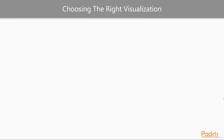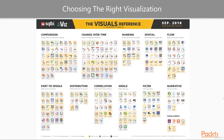Another important aspect to knowing your visualizations is how to identify the right chart to use depending on the type of data and the story you're wanting to tell. A great tool for this is called the Visuals Reference, made by Marco Russo and Alberto Ferrari over at SQLBI. It categorizes the majority of available visualizations in Power BI into categories based on how you want to present your data story. I'll provide the link at the end of the video as well.